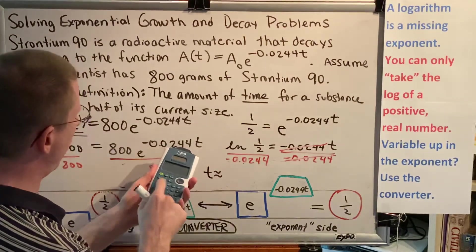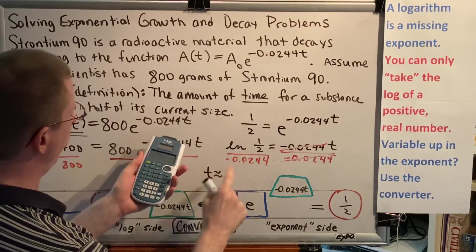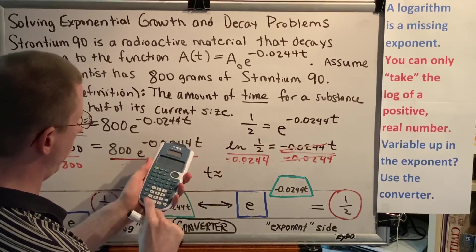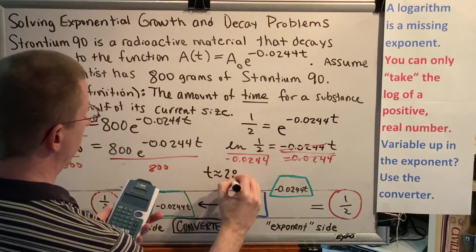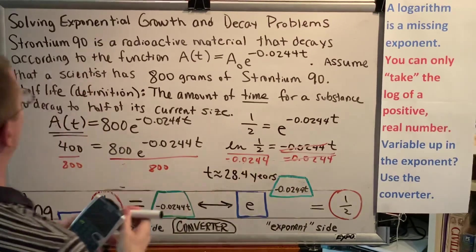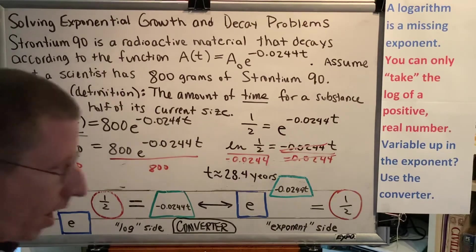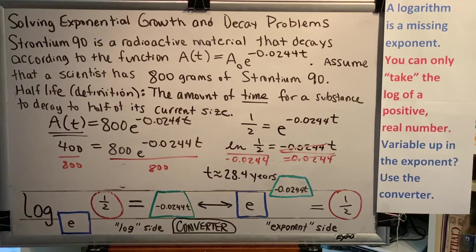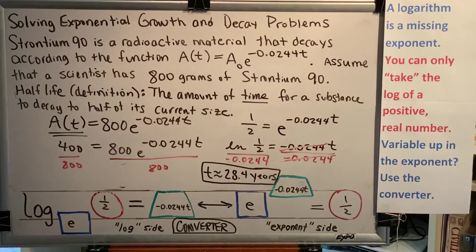All right, here we go. We'll start with the natural log of one half. Natural log, one divided by two, enter. Now that I have that value for the numerator, which we note is negative, we'll divide by the denominator, negative 0.0244. And we get 28.4 approximately. 28.4 years. Okay, so now we have discovered that the half-life of Strontium-90 is 28.4 years. And with that, we have finished this problem.